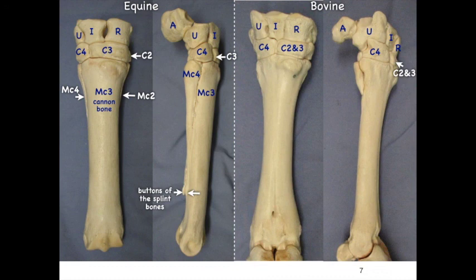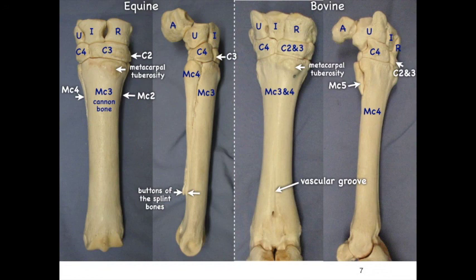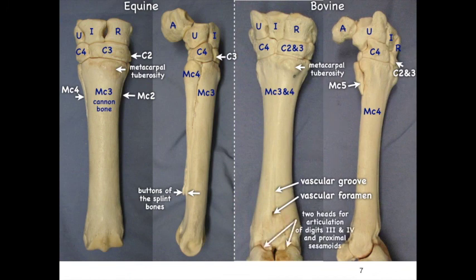In the bovine, metacarpals 3 and 4 are fused, and we can see just metacarpal 4 from the lateral view. The bovine also has metacarpal 5. On the proximal end of the metacarpus we have the metacarpal tuberosity, where the extensor carpi radialis muscle attaches. Between the two metacarpal bones in the bovine there is a vascular groove through which the dorsal metacarpal artery 3 passes, then sends a branch through the vascular foramen to the palmar side — referred to as the distal perforating metatarsal artery. Distally there are two heads of articulation for digits 3 and 4, as well as the proximal sesamoids.